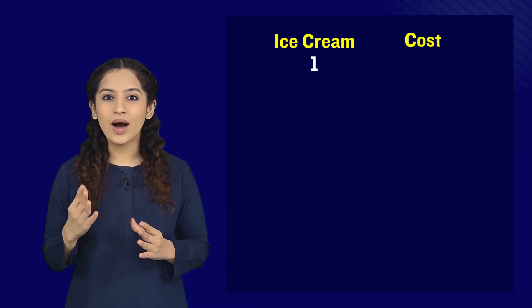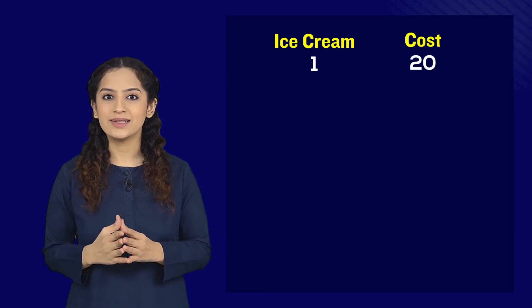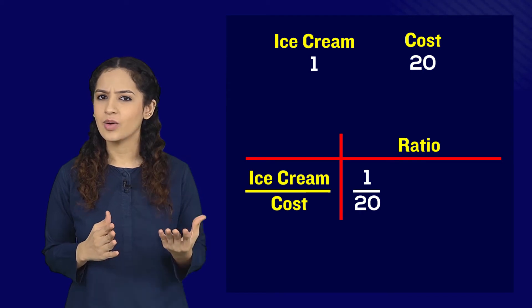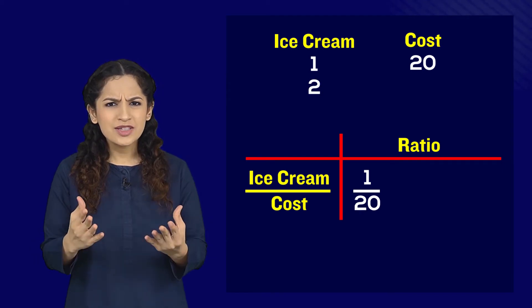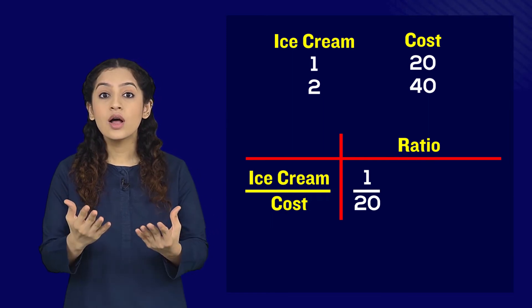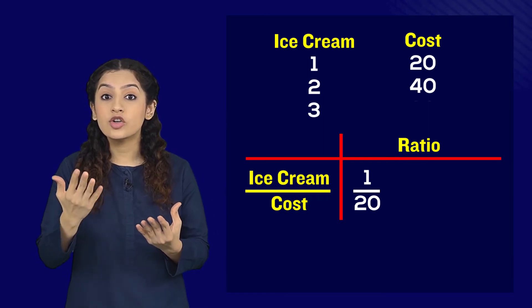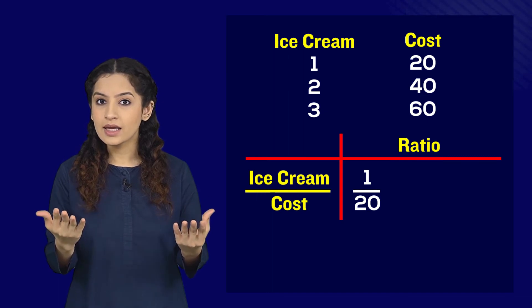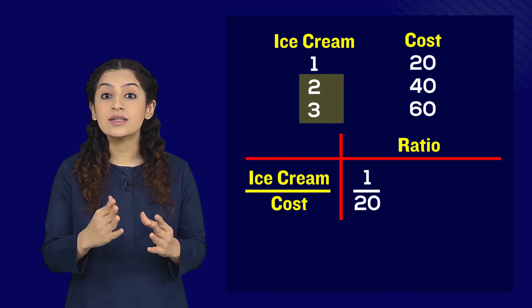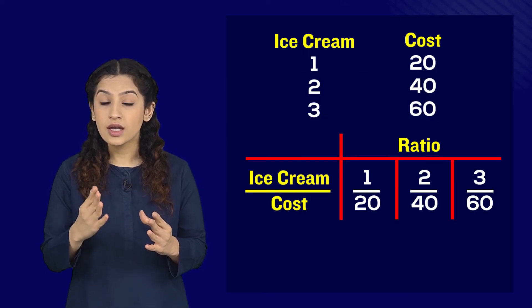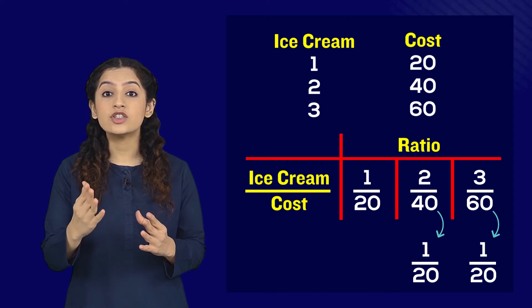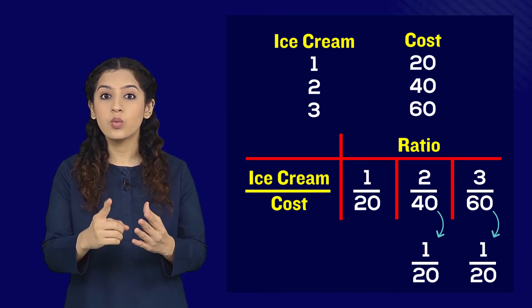Suppose that one ice cream costs you rupees 20, and this is how we can write this as a ratio. Now how much will two ice creams cost you? 40, right? So the more the ice creams, the greater the cost. This is a direct variation. Even if we convert these cost and quantities to ratios...